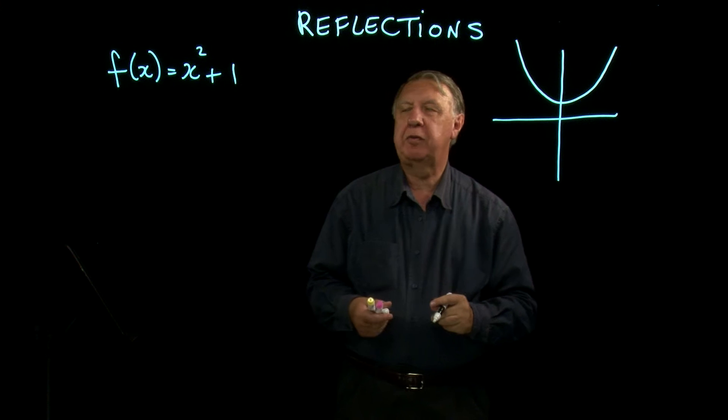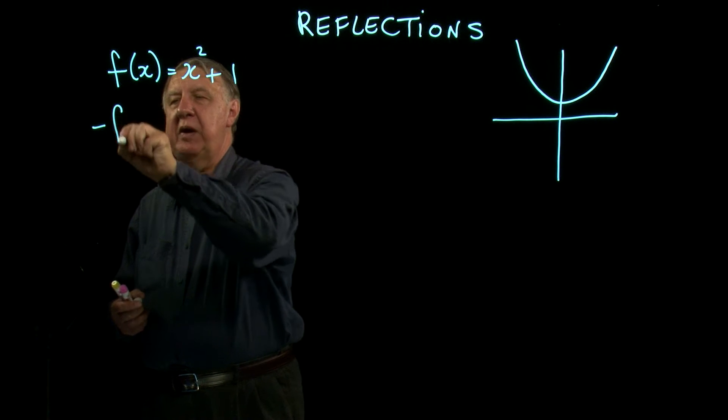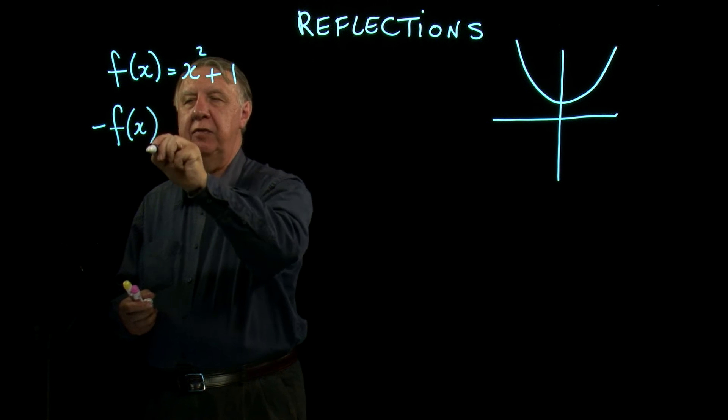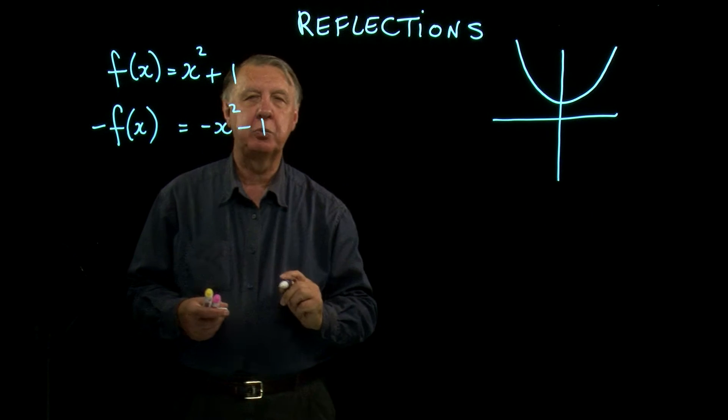Now, you have to know about two types of reflection. What can we say about negative f of x? Well, that will be minus x squared minus 1.